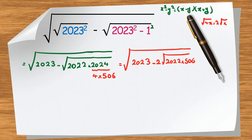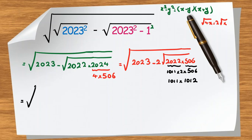In the next step, 2022 equals 1011 times 2, so we write 1011 times 2 times 506, which equals 1011 times 1012. Let's rewrite the full expression as the square root of 2023 minus 2 times the square root of 1011 times 1012.